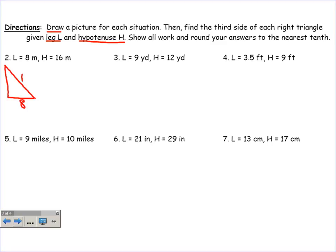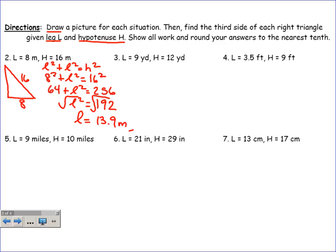This is 8, this is 16. I'll make sure to write it as meters for my final answer. L squared plus L squared equals H squared. 8 squared plus L squared equals 16 squared. That's 64 plus L squared equals 256. Subtract 64 from both sides to get L squared equals 192, and the square root of that is 13.9 meters. This is the amount of work that I would expect you guys to show for each problem.